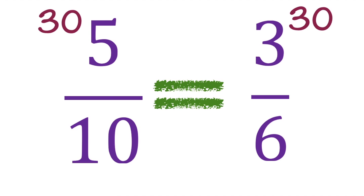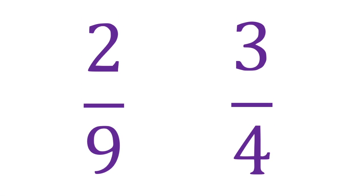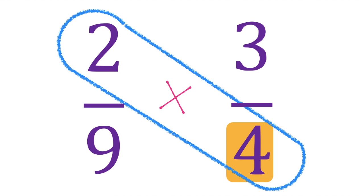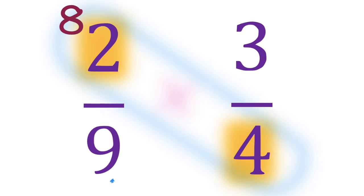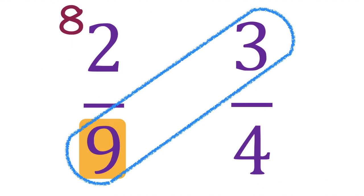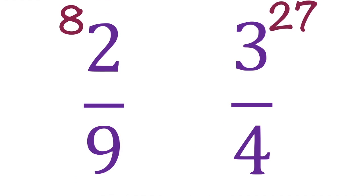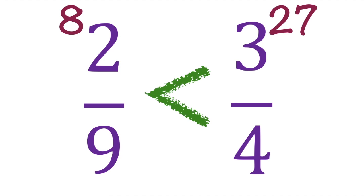How about this example? 2 ninths and 3 fourths. Let's multiply this one first. 4 times 2 is equal to 8. How about 9 times 3? That is equal to 27. Let's compare 8 and 27. So, 2 ninths is less than 3 fourths because 27 is bigger than 8.